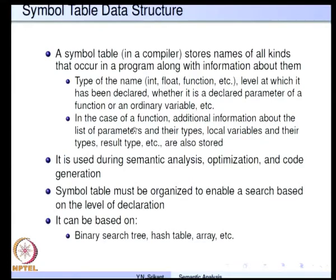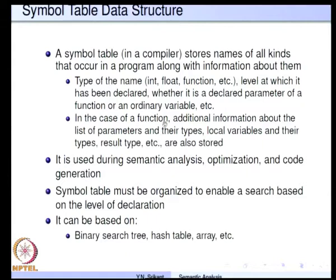In the case of a function, we also need to access the list of parameters from the function name along with their types. We must also be able to identify the set of local variables corresponding to a particular function, the result type of the function, and so on — all of these must be stored along with the function name in the symbol table.